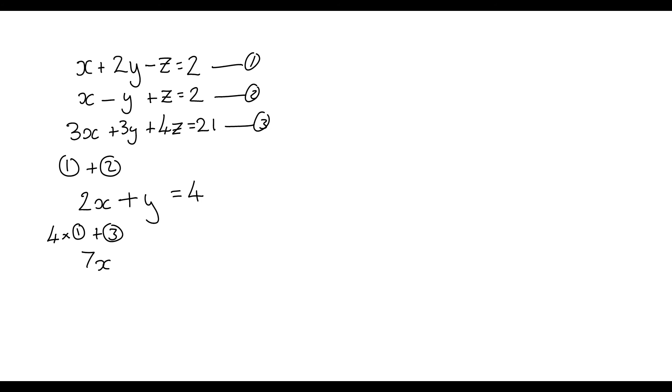4 lots of 2Y is 8Y plus the 3Y is going to give me 11Y. And then 4 lots of 2 is going to give me 8 plus the 21 is going to give me 29. So I'm going to call those equations 4 and 5.